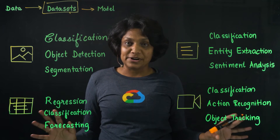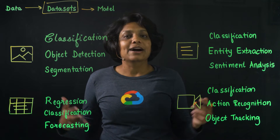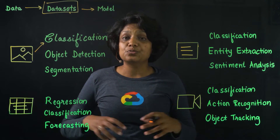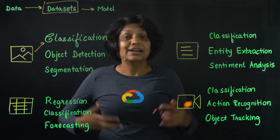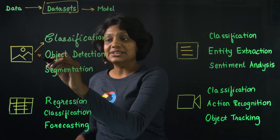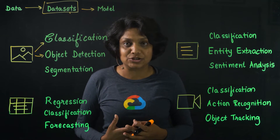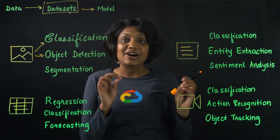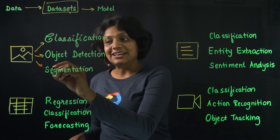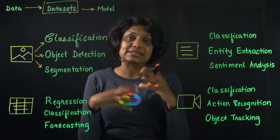Currently, there are four supported data types: image, tabular, text, and video. Image data sets currently support image classification, where models predict one or many labels from an image — for example, identifying the types of dog treats from images. Object detection is where the model draws bounding boxes around items in the image, such as identifying the location of different vegetables within a picture of salad. Image segmentation is where the model can assign a label to pixel-level regions in an image.